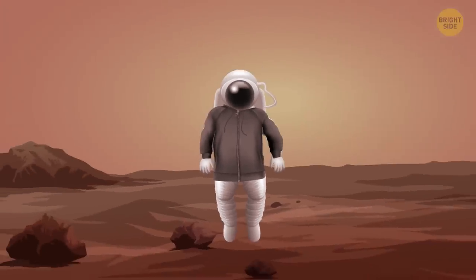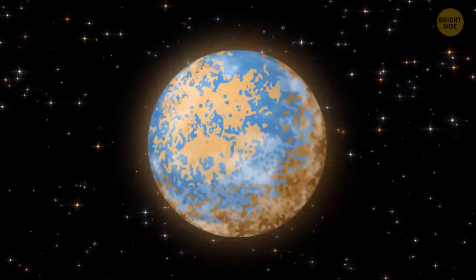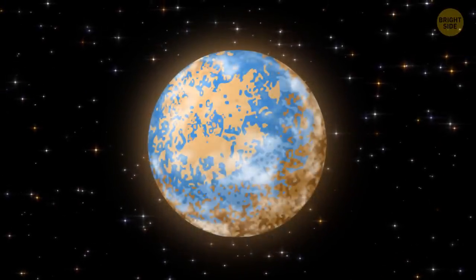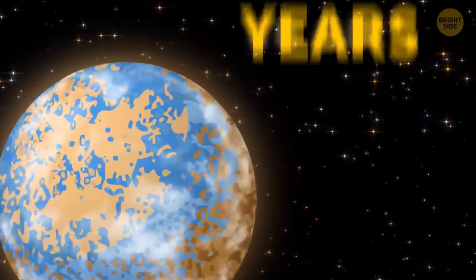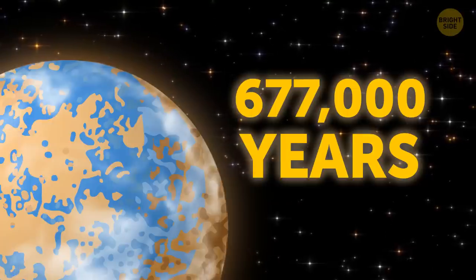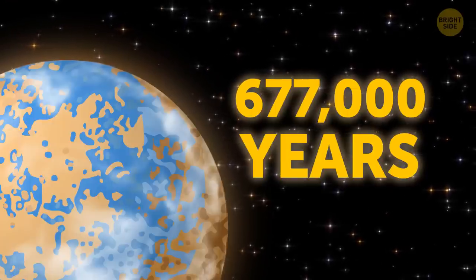There might be an atmosphere, mountains, seas, and oceans here. Which means this planet might be suitable for a human colony. But it would take about 677,000 years to get here using traditional rockets.